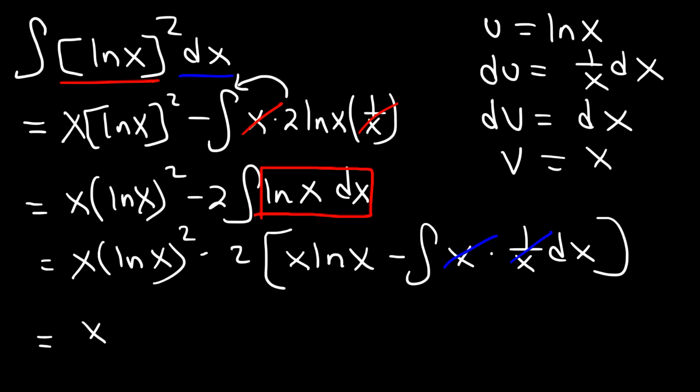So we have x ln x squared. And distributing the negative 2 is going to be negative 2 x ln x. Negative 2 times negative 1 is going to be positive 2 times the integral of 1 dx.